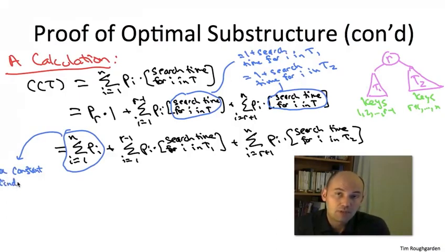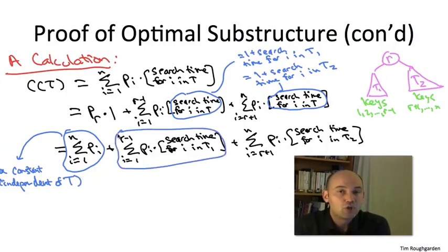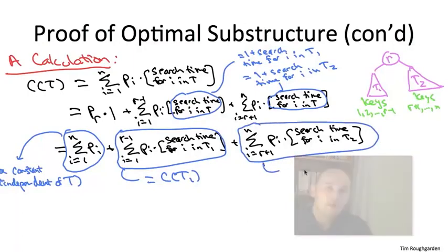What's the second sum? It's the sum of the objects from 1 to r minus 1, the frequency of i times the search time for i in the search tree T1. Well, we have a much better, shorter nickname for that sum. It's the weighted search time of the search tree T1 for the objects it contains, 1 through r minus 1.